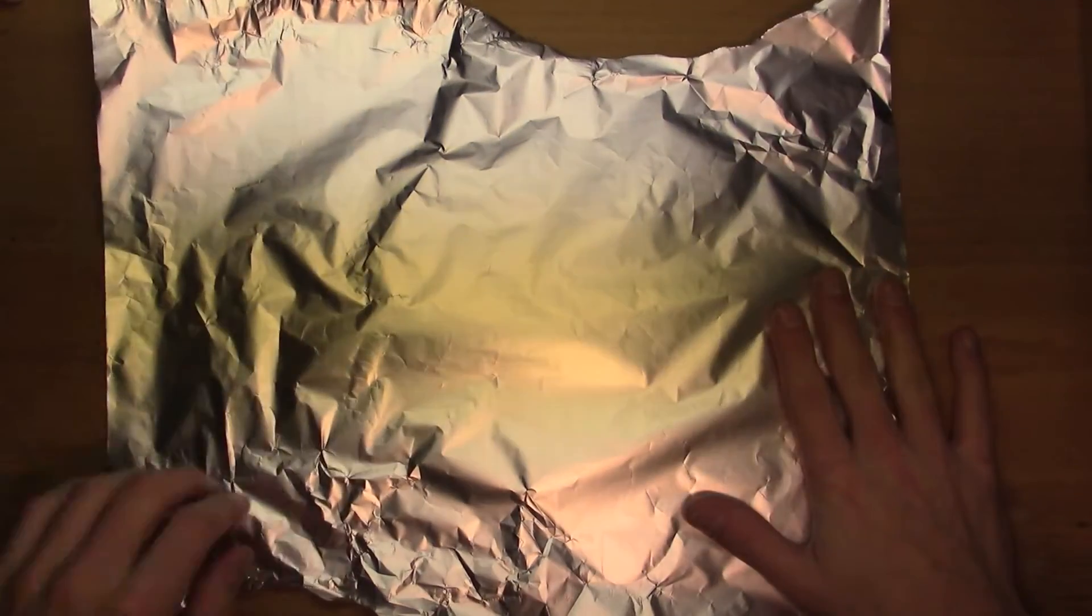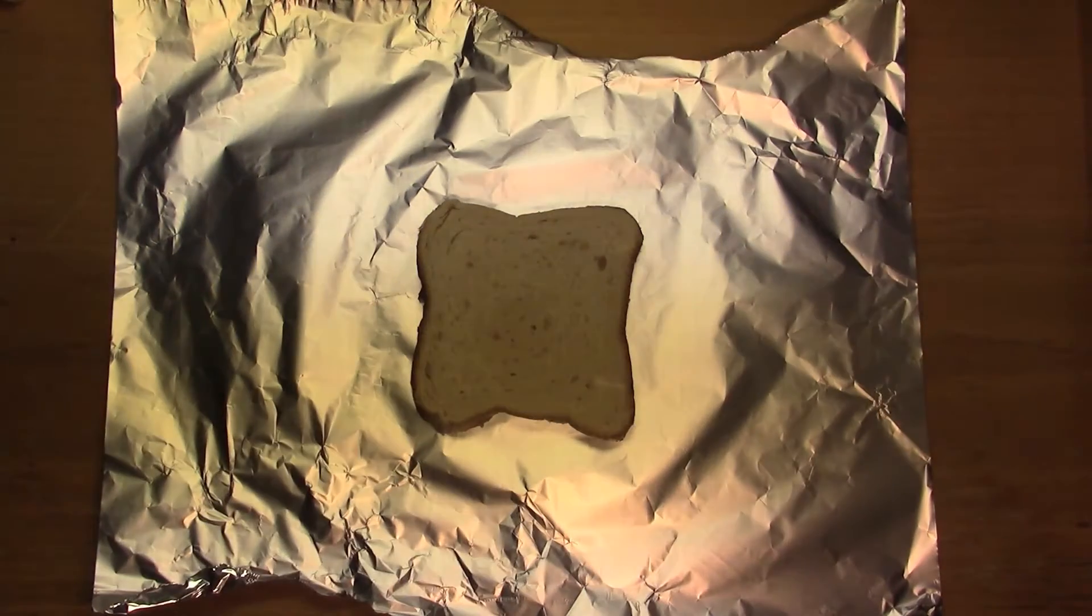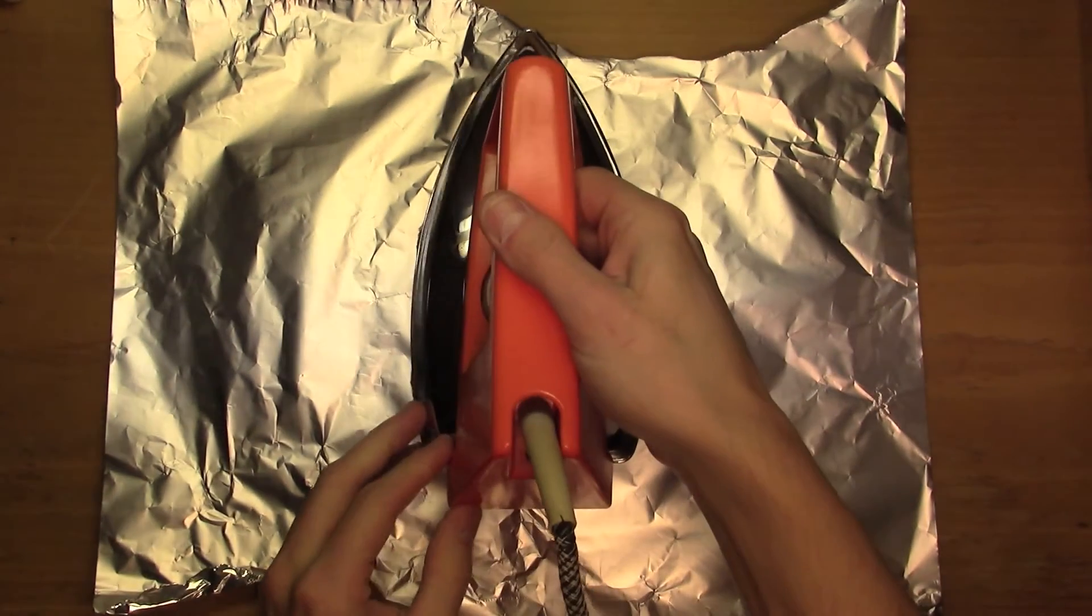Of course we need to put the bread between two flat conductive surfaces to run current through the whole piece of bread and get it evenly toasted. Thin foil and a clothes iron with a solid metal base.